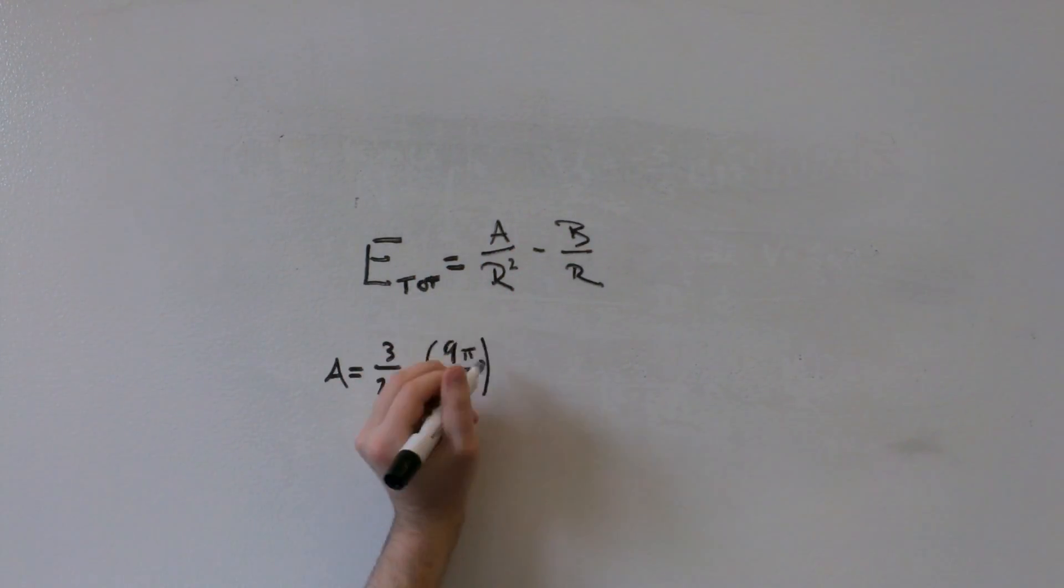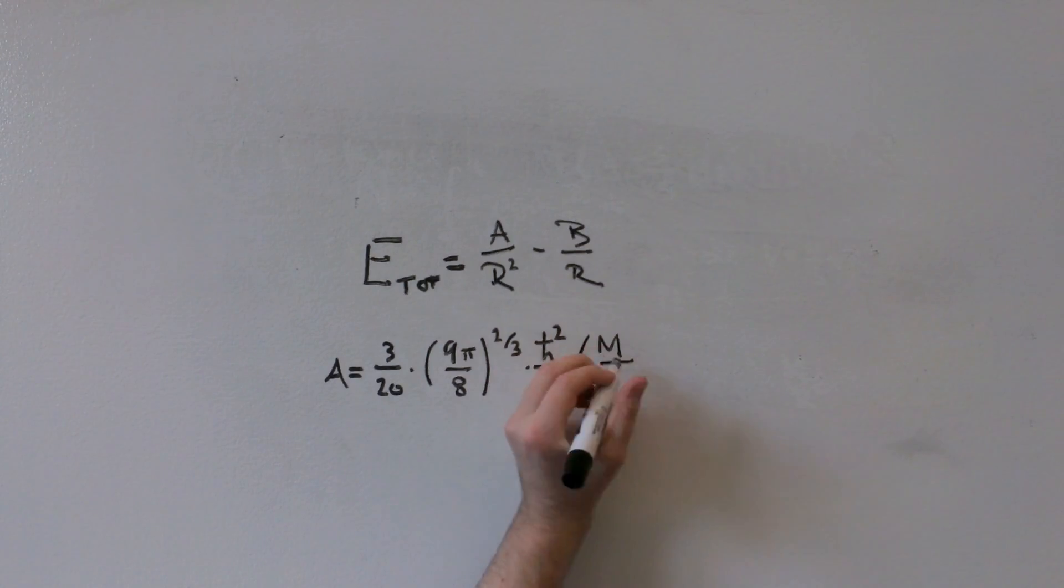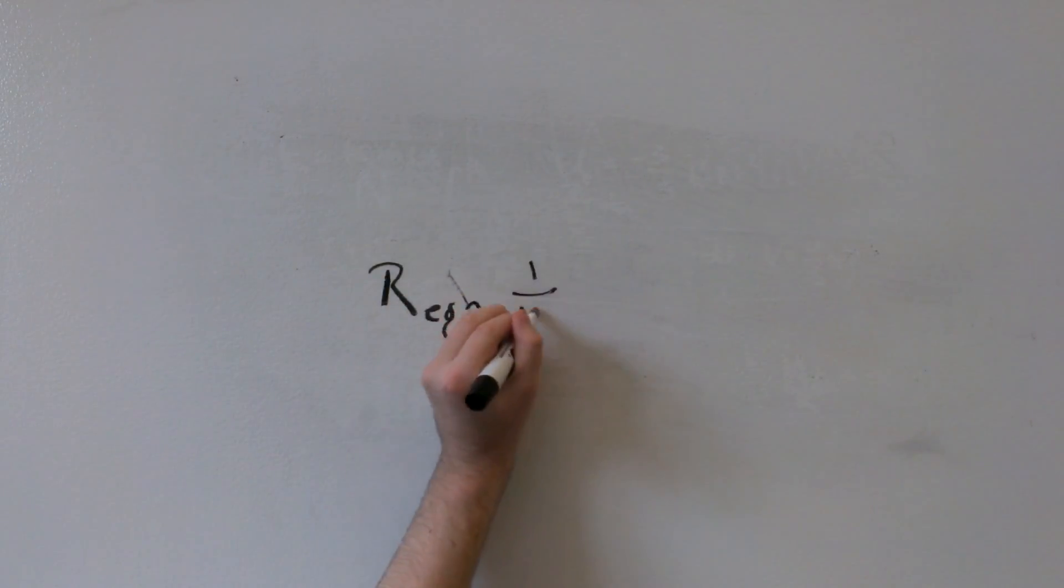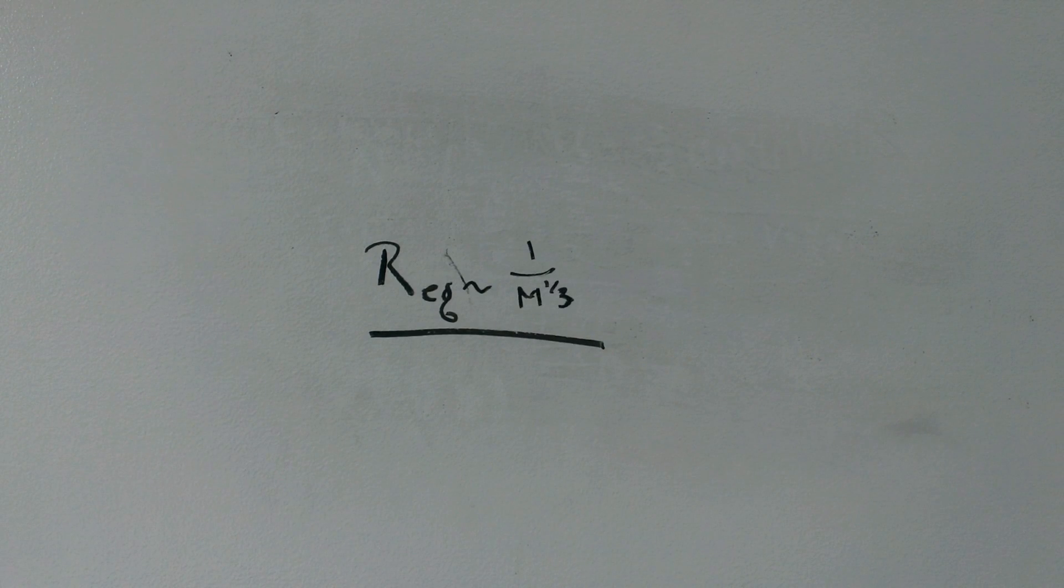Now we have an expression for the total amount of energy of the system, and can find when this is at an equilibrium. We find that the equilibrium radius is inversely proportional to the cube root of the mass, meaning that the more massive the white dwarf, the smaller it will be. But we can't get a limit out of this.